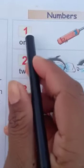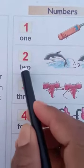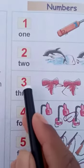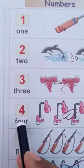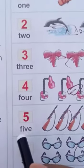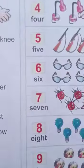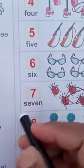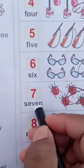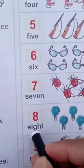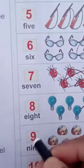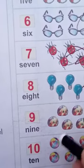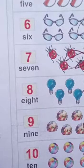O-N-E, 1. T-W-O, 2. T-H-R-E-E, 3. F-O-U-R, 4. F-I-V-E, 5. S-I-X, 6. S-E-V-E-N, 7. E-I-G-H-T, 8. N-I-N-E, 9. T-E-N, 10. Okay student, I hope you understand.